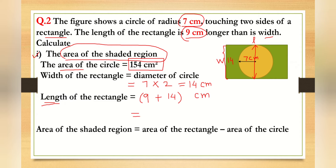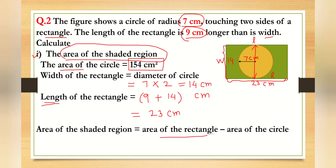So the length of the rectangle is 23 centimeters. To find the area of the shaded region, we take the area of the rectangle and subtract the area of the circle. That gives us the shaded area.